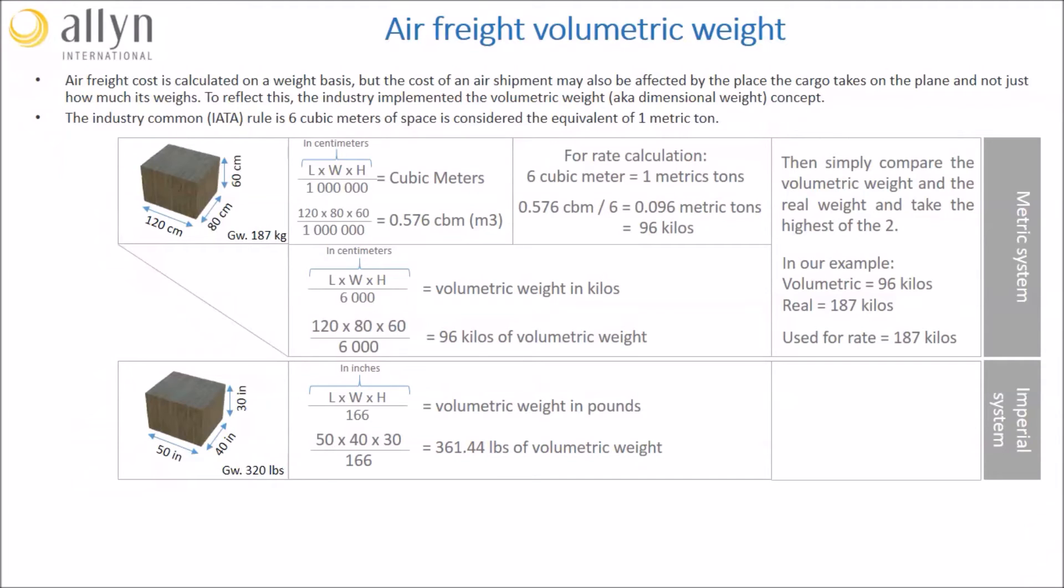This weight is generally rounded up to the closest half pound or half kilo. If your contracted rates are calculated using kilos, you can simply multiply this result by 0.454 to get your volumetric kilos. Once again, we compare the volumetric to the real weight, and this time we will use the volumetric weight, 361.5 pounds, as it is the highest of the two.